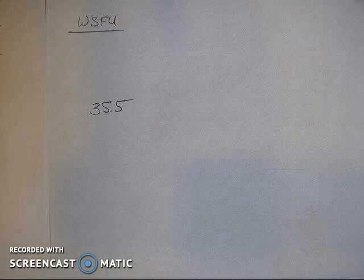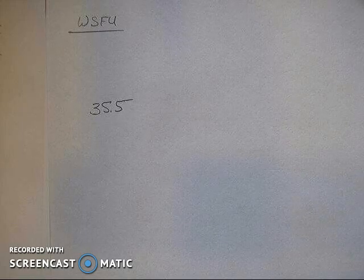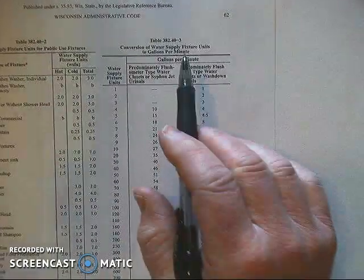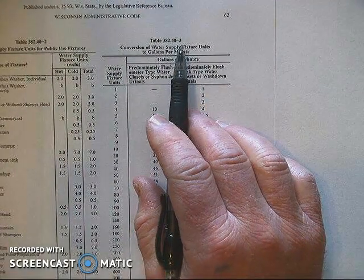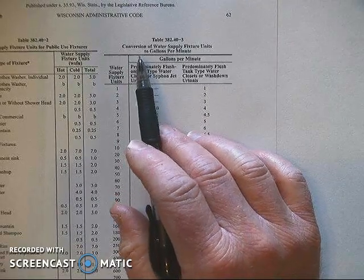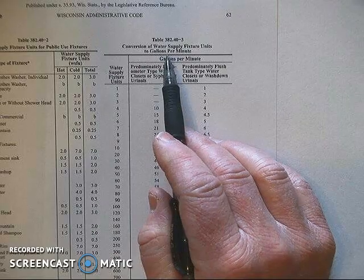For this activity we're going to convert water supply fixture units to gallons per minute. To do that we are going to use table 38240, table 3 from the Wisconsin plumbing code book, entitled conversion of water supply fixture units to gallons per minute.